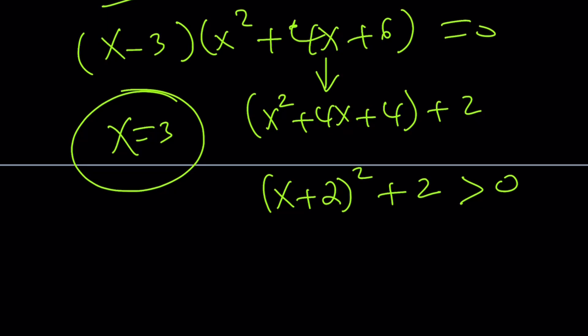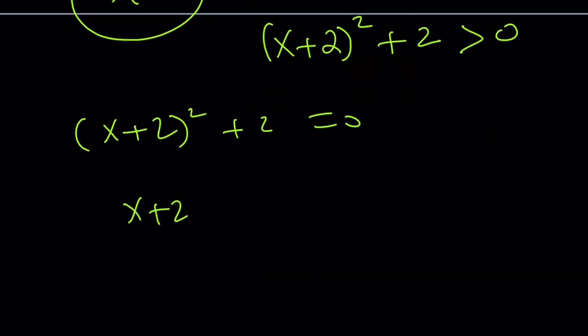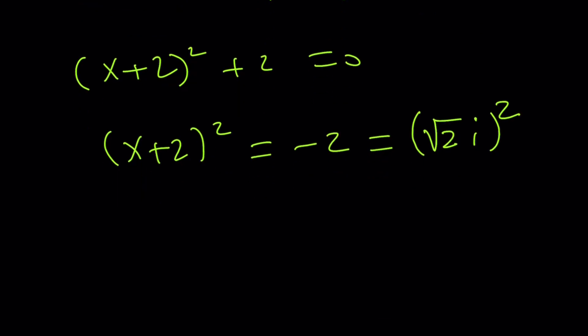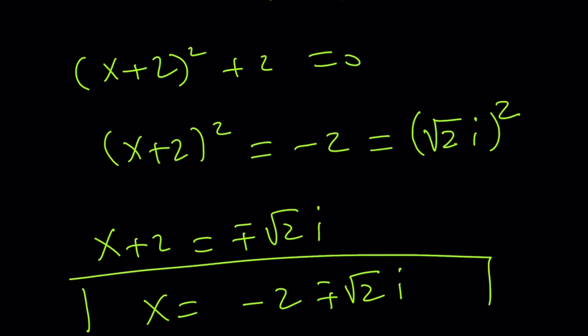So, the only real solution is x equals 3, but how do you find the other solutions? Easy. Just set this equal to 0, and you're going to get (x + 2)² equals negative 2, which can be written as (√2i)². From here, by plus minus, x + 2 becomes plus minus √2i, and x becomes -2 plus minus √2i. So, those are going to be the non-real complex solutions. Of course, you're not going to see them on the graph, but let me show you the graph.